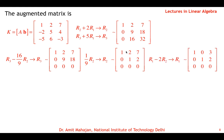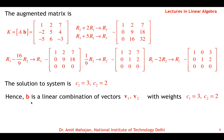Continuing to reduced row echelon form: divide row 2 by 9, then apply R1 → R1 − 2R2 to eliminate the (1,2) element. The solution is C1 = 3 and C2 = 2. The system is consistent, so B is a linear combination of V1 and V2 with weights 3 and 2: B = 3·V1 + 2·V2.